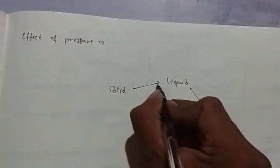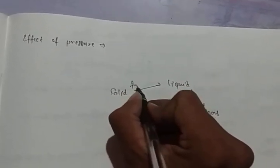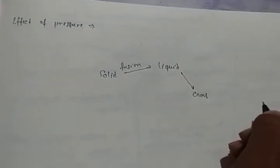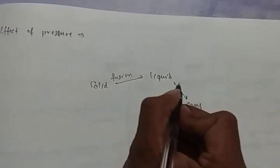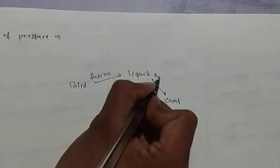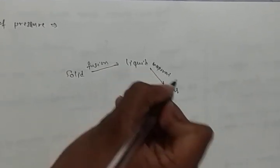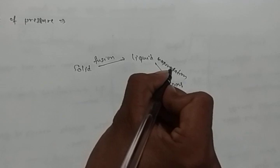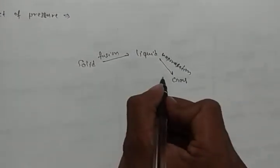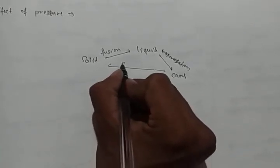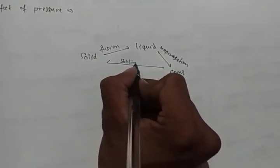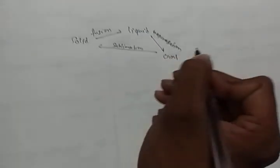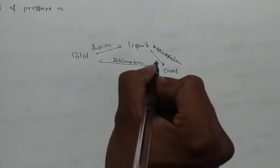When solid changes into liquid it is known as fusion. When solid changes to liquid that process is called fusion. When liquid changes to gas that process is called vaporization. When a solid changes directly to gas, that process is called sublimation.